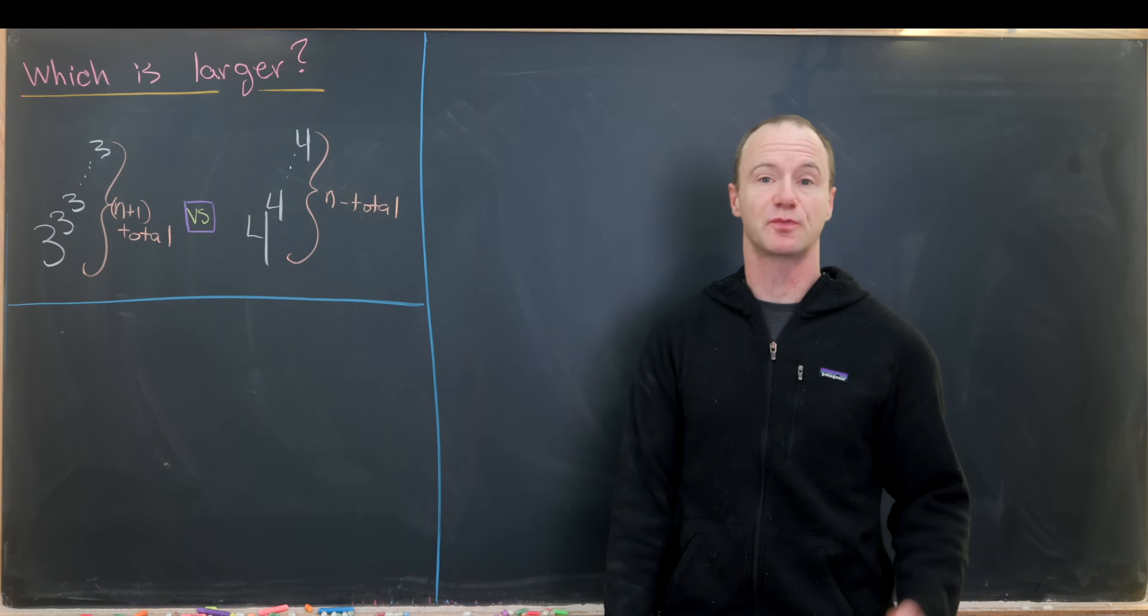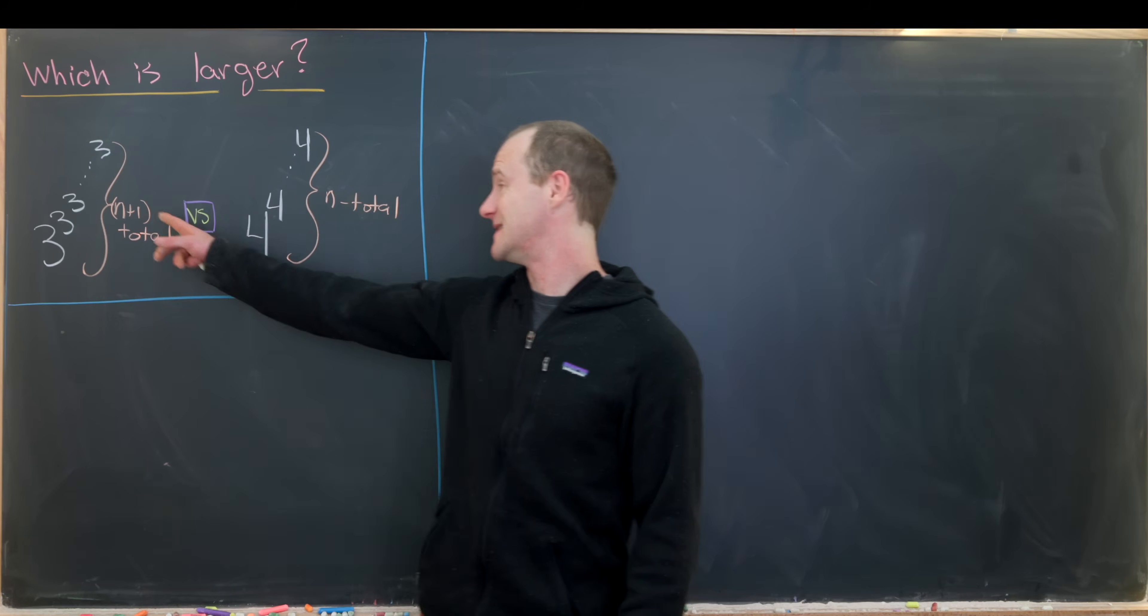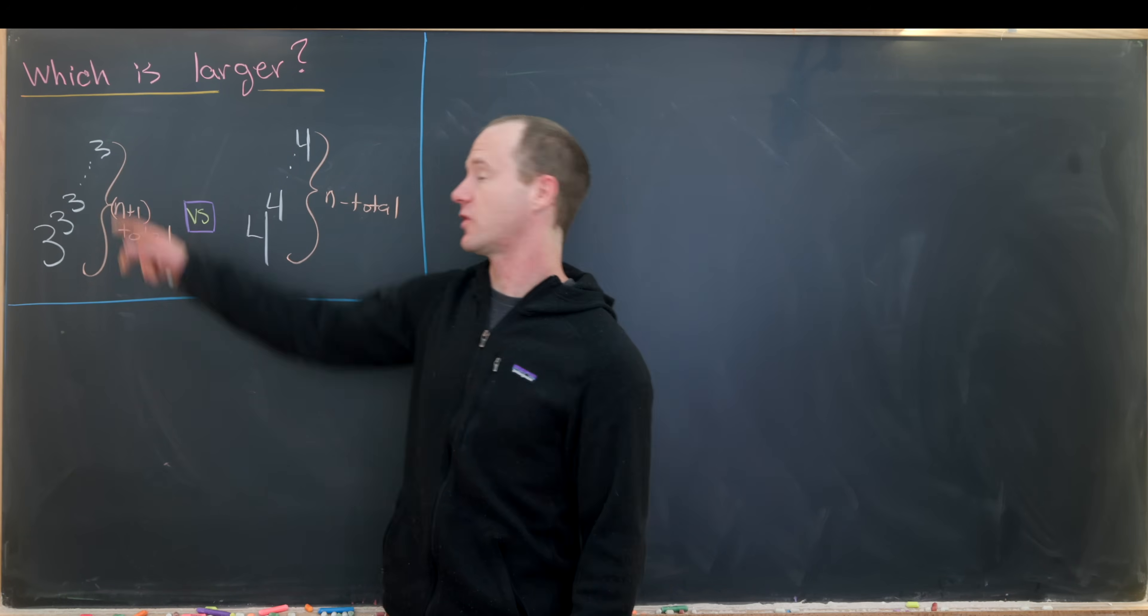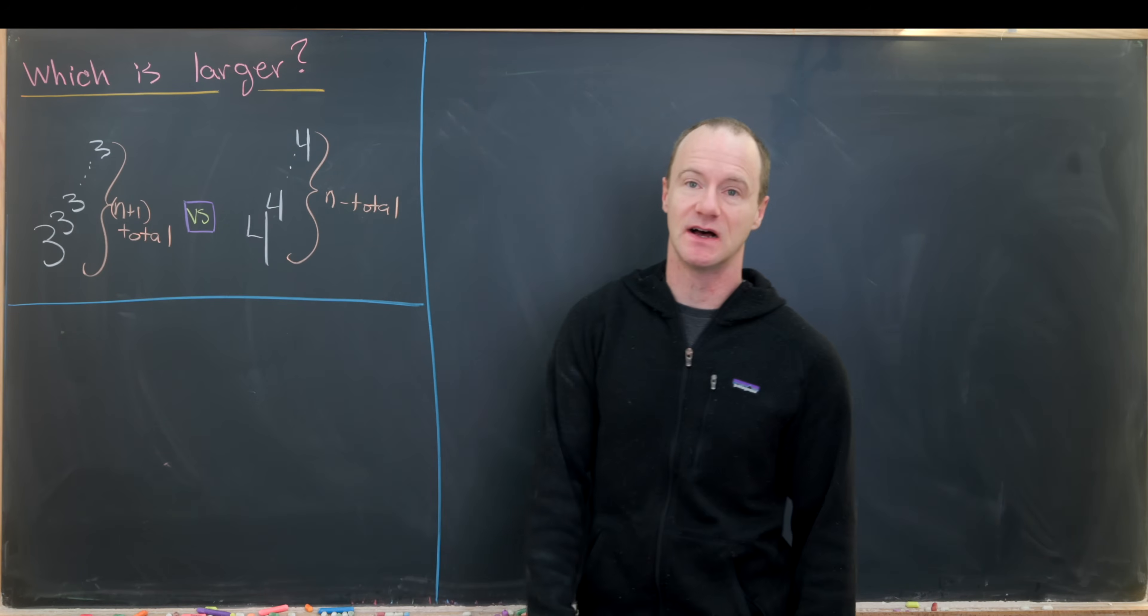Here I've got a nice which is larger problem involving two power towers. One that contains n plus 1 total 3s, so we have like 3 to the 3 to the 3, n plus 1 times.